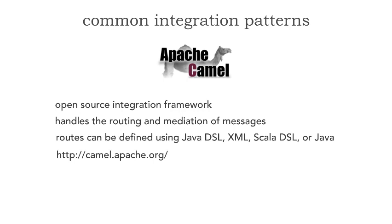I'm going to show you the implementation of these patterns using Apache Camel. The implementation doesn't really matter, but I want to show it to demonstrate how simple it can be and to add some concrete nature to this. Apache Camel is an open source integration framework — it is an integration hub. It handles routing and mediation of messages and has a Java DSL, XML DSL, or Scala DSL. Please don't be concerned if you're not interested in Camel or you're on another platform — it's just to illustrate these patterns concretely.